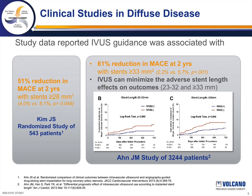Next, I'd like to touch on two clinical studies on the use of IVUS in diffuse disease. The first study, published in JACC Interventions in 2013, was a study of 543 patients randomized to angiographic or IVUS-guided intervention. The results showed a 51% reduction in MACE rate at two years in patients with stents greater than 28 millimeters when IVUS was used, a reduction from 8.1% to 4.0%.